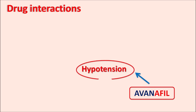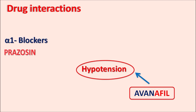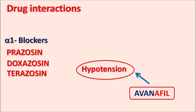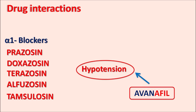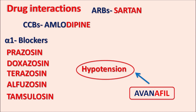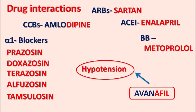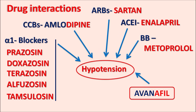Similarly, avanafil can produce hypotension, and many other drugs also produce hypotension. Alpha-1 blockers such as prazosin, doxazosin, terazosin, alfuzosin, and the alpha-1A blocker tamsulosin can all produce hypotension. Calcium channel blockers such as amlodipine and nifedipine, ARBs (angiotensin receptor blockers) such as losartan, valsartan, and candesartan, ACE inhibitors such as enalapril and ramipril, and beta blockers such as metoprolol — all these drugs can produce significant hypotension when combined with avanafil.